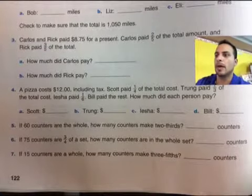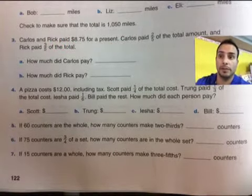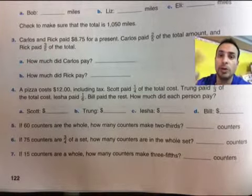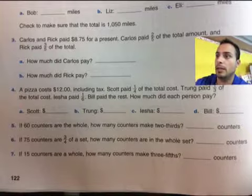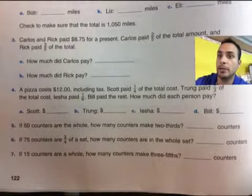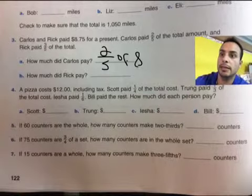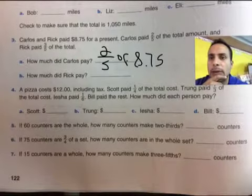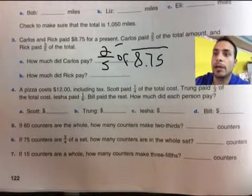Question 3: Carlos and Rick paid $8.75 for a present. Carlos paid two-fifths of the amount and Rick paid three-fifths. They didn't split it right in half — one paid two out of five parts, and the other paid three out of five parts. How much did Carlos pay? We need to know what two-fifths of $8.75 is. What do I do to the five to make it into $8.75? Do the same to the two and that gives you the answer. Simply divide $8.75 by five, and that gives you the number to multiply the two into.